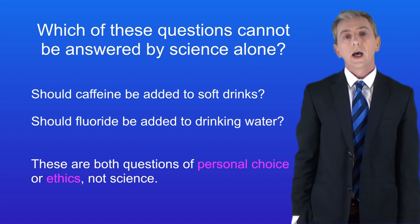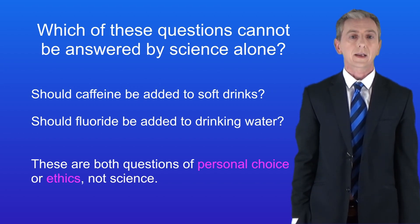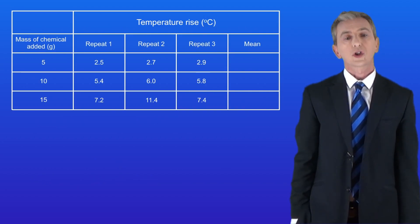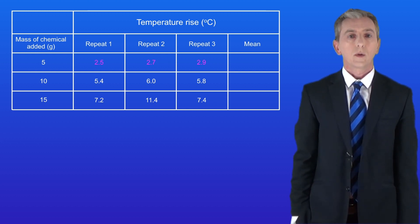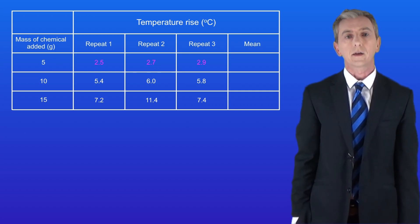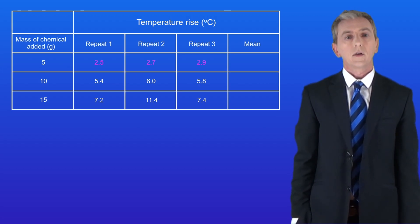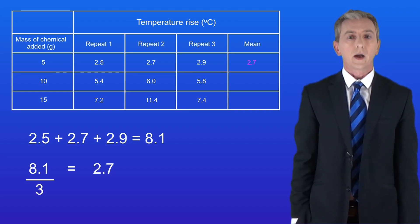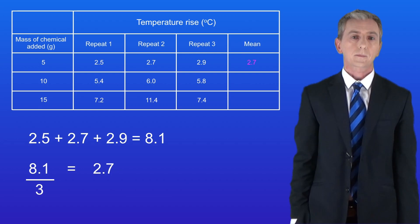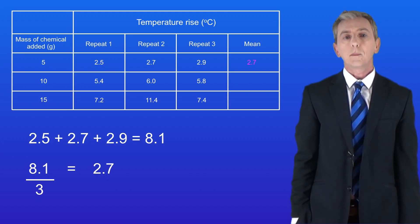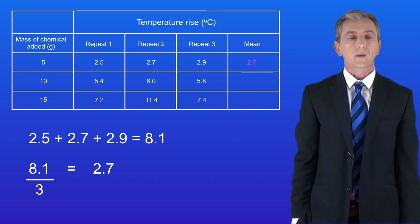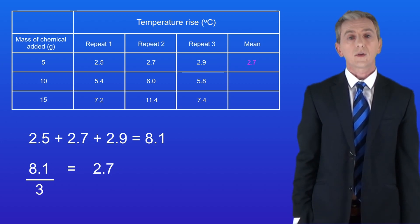Let's finish by looking at calculations. One calculation you're often expected to do is calculate a mean. This table shows the temperature rise when different masses of a chemical are added to water. For the first row we have 2.5, 2.7, and 2.9 — these are all relatively close together, so there are no anomalous results. To calculate the mean, add the three numbers: 2.5 + 2.7 + 2.9. It is critical that you press equals on your calculator before dividing. Adding these gives a total of 8.1, and dividing by 3 gives a mean of 2.7. For the second row, the mean is 5.73 recurring, which we round to one decimal place because the data is given to one decimal place.